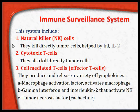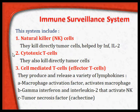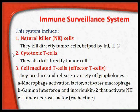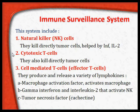Natural killer cells are specialized immune cells which directly kill the tumor cells, helped by factors like interferon and interleukin-2. Interferon and interleukin-2 help the natural killer cells to kill the tumor cells. Cytotoxic T cells are a special form of T cells that directly kill the tumor cells by cytotoxic activity.